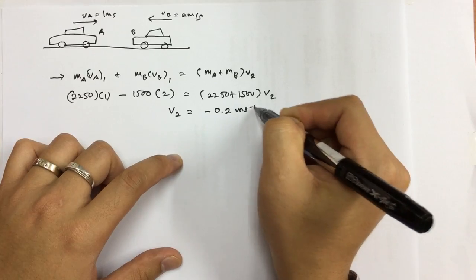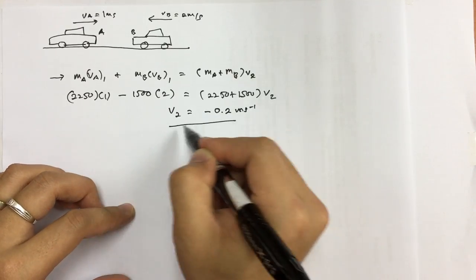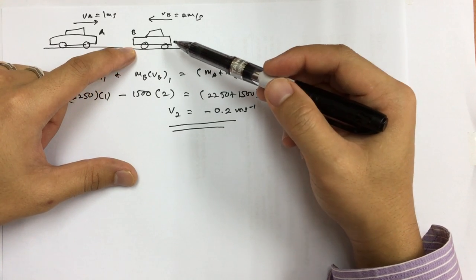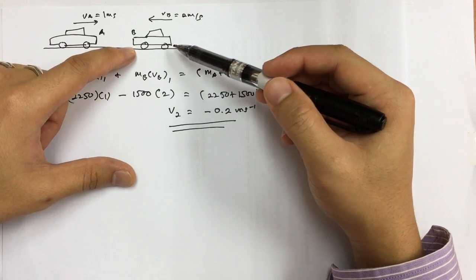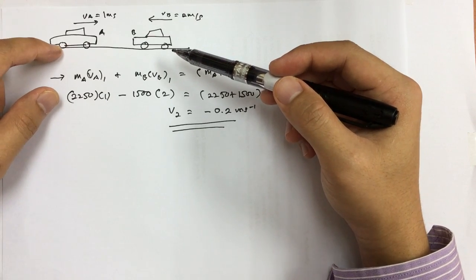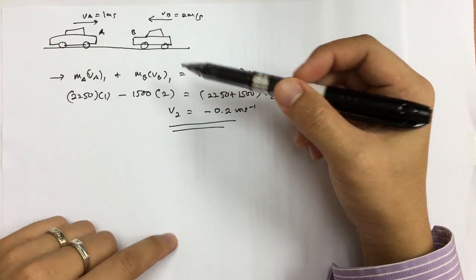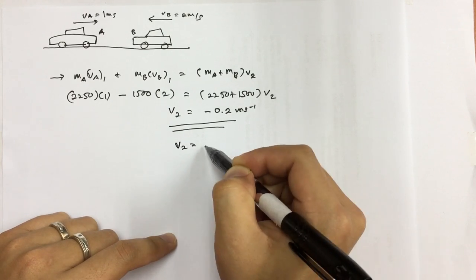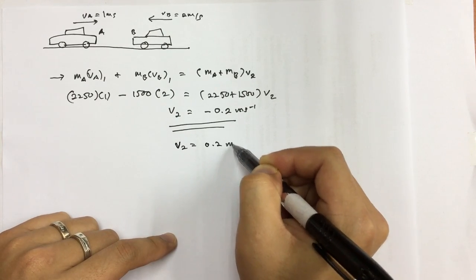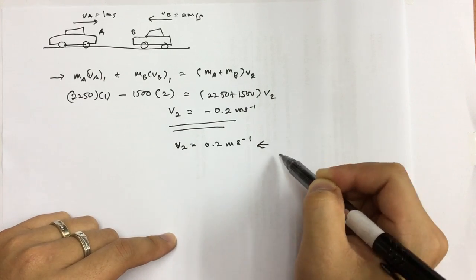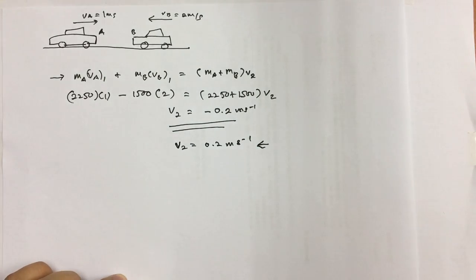This simply means that since car B is moving faster than car A, although car A is having bigger mass than car B, it goes to the left. So here we have V2 equals 0.2 meters per second going to the left. So this is the final answer.